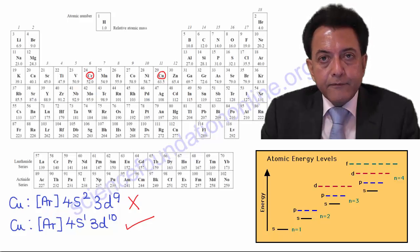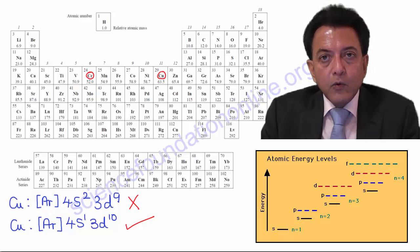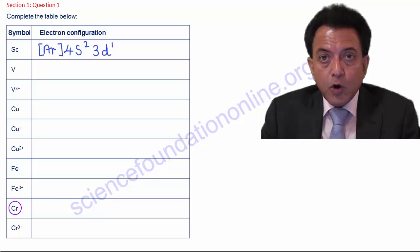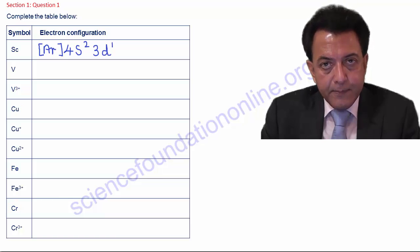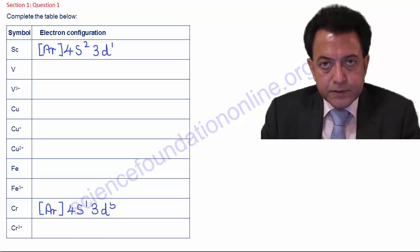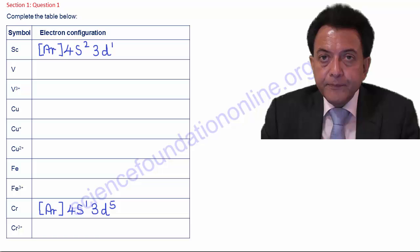Since I have these electron configurations, I can now fill in the electron configurations for copper and chromium in our table. For chromium, we can write that as [Ar] 4s1 3d5. Remember, that was one of those exceptions. And similarly, we can write in the electron configuration of copper, Cu, as being [Ar] 4s1 3d10.